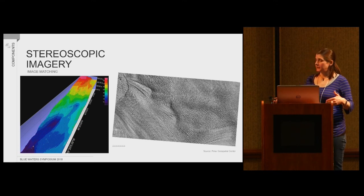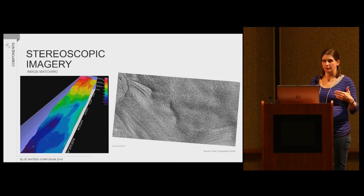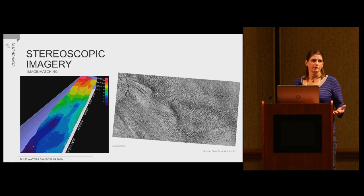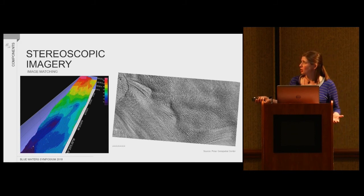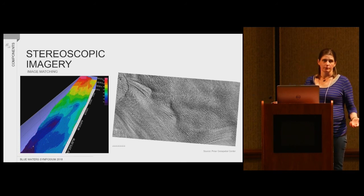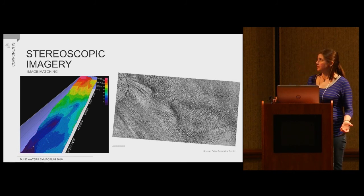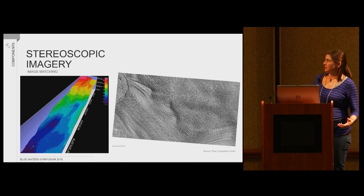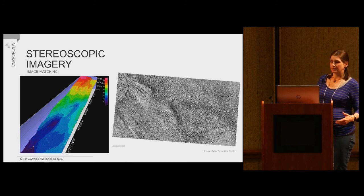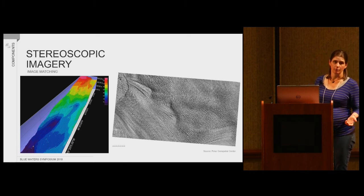The DEM creation step takes those points, removes some outliers, perhaps some blunders, fills in some errors, and grids them into a raster that can be used for topographic analysis. This looks a little bit like an image of a glacier, but it's actually a hillshade rendering of a topographic model.